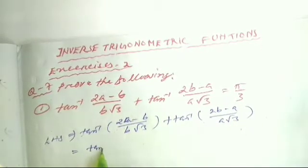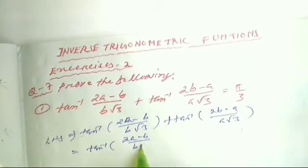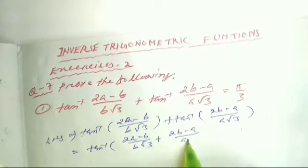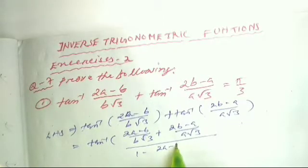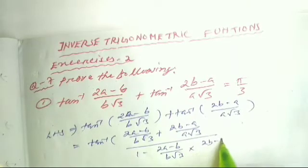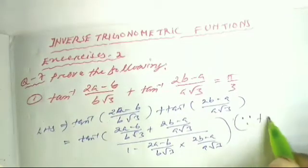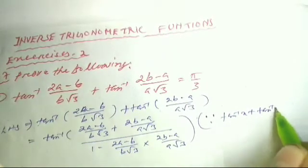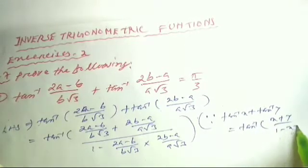Applying tan⁻¹x + tan⁻¹y: the numerator becomes (2a−b)/(b√3) + (2b−a)/(a√3), all divided by 1 minus (2a−b)/(b√3) × (2b−a)/(a√3). The formula is tan⁻¹x + tan⁻¹y = tan⁻¹[(x+y)/(1−xy)].